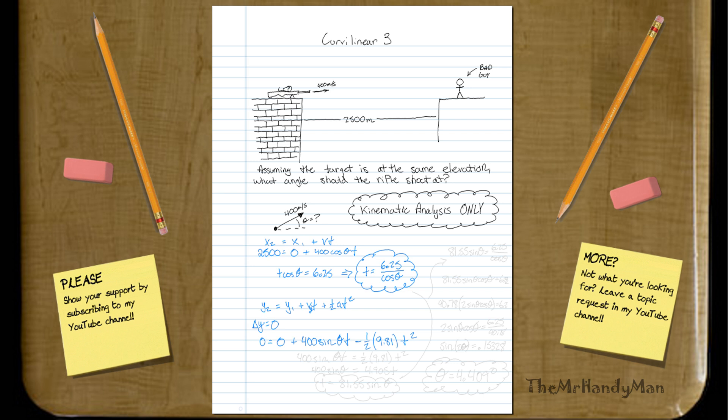So now that we have that, I'm just going to clean this up a little bit. 400 sine theta t equals 1 half 9.81 t squared.